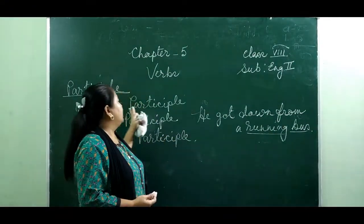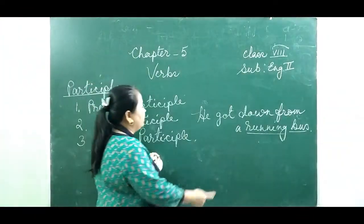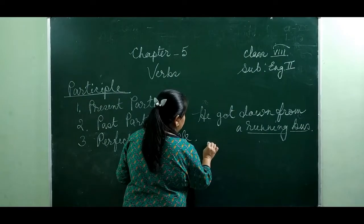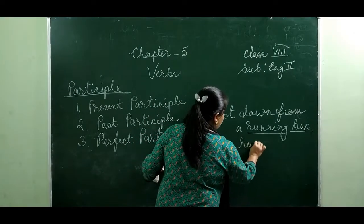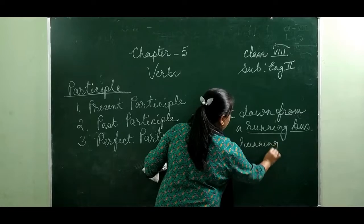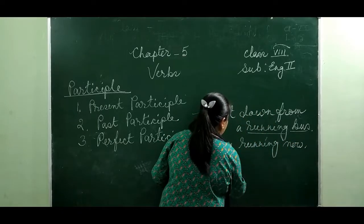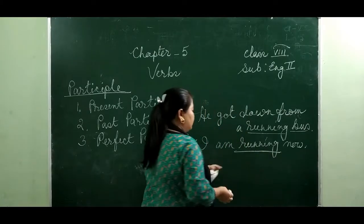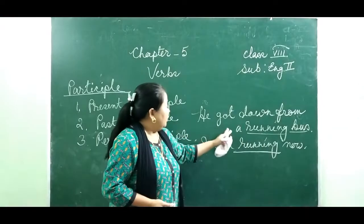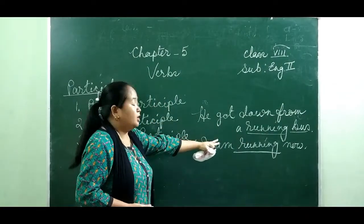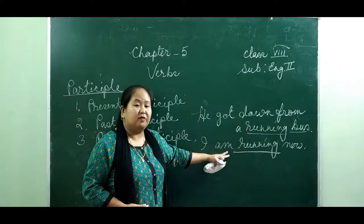Present participle can also be used as a verb in a sentence. For example: 'I am running now.' Here the 'ing' form of verb 'running' is used as a verb. So present participle can be used as an adjective and it can be used as a verb in a sentence.